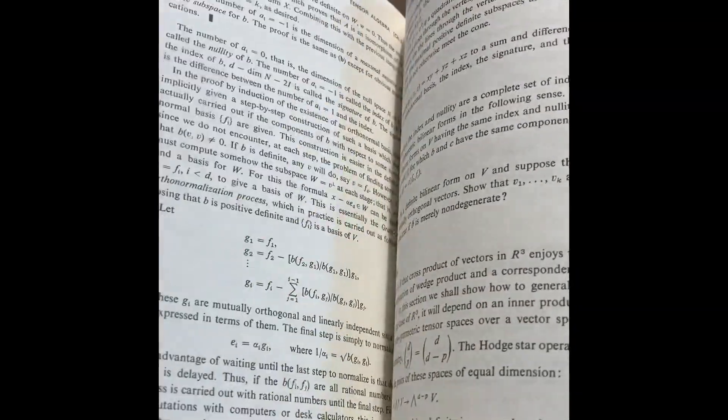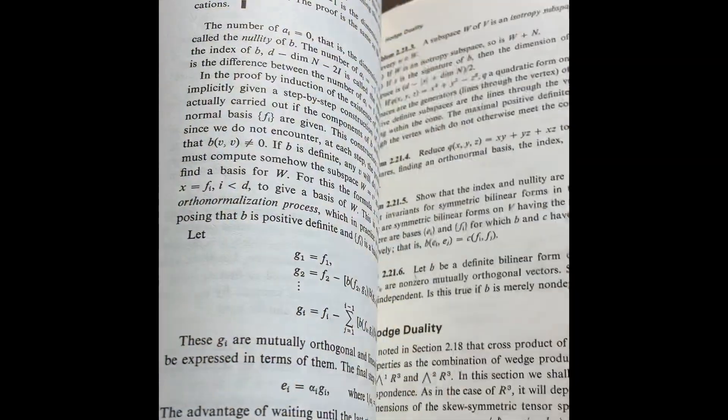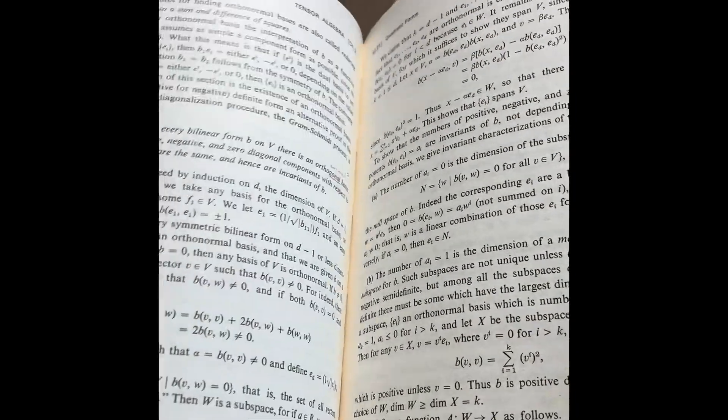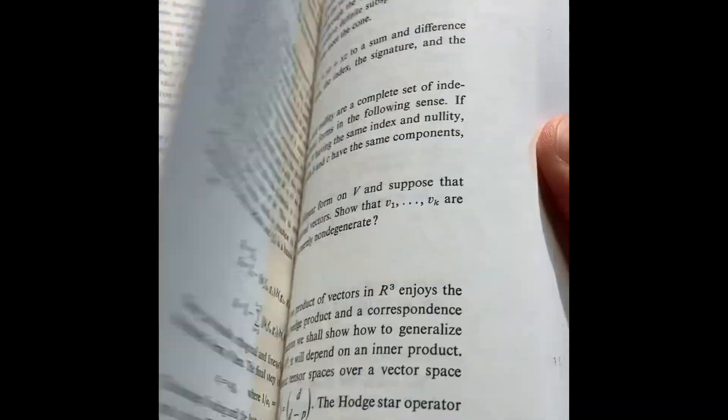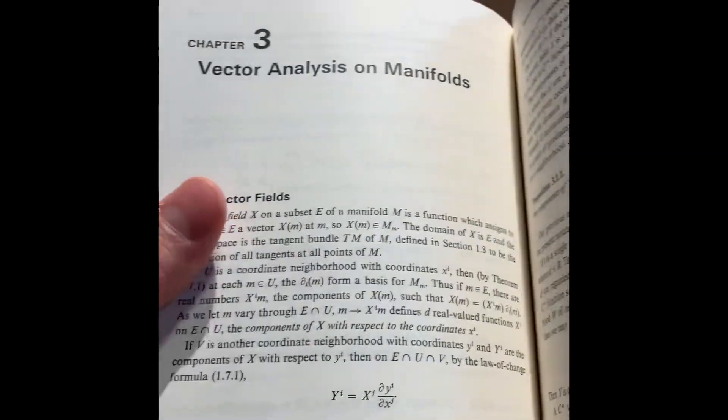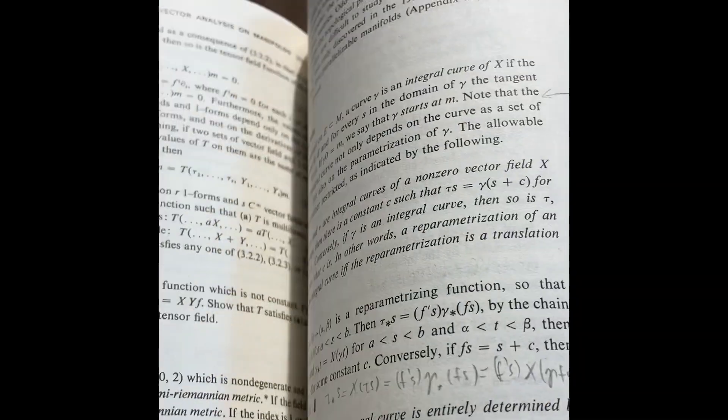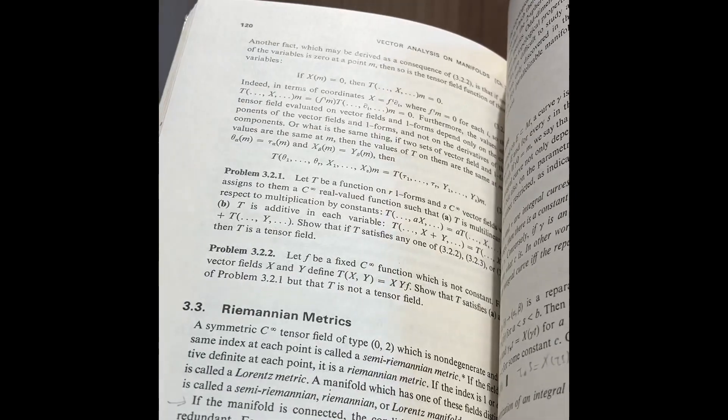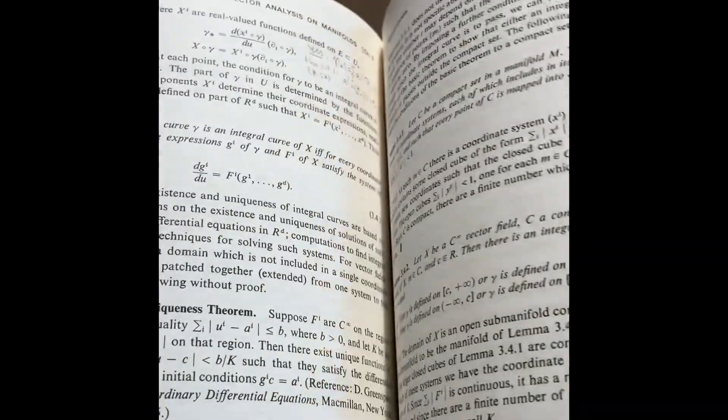In this, you can move on to definition of a tensor, I believe. No, bilinear forms, actually. I don't see anything, excuse me, I'm on top of the textbook, because I don't have my glasses with me here. Vector fields. Riemannian matrix down there. Geodesics.